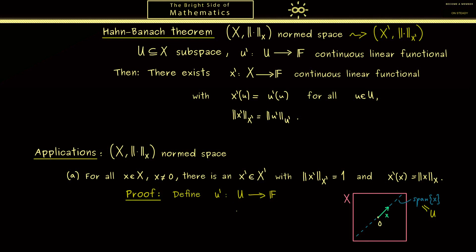Hence an arbitrary element always looks like λx. And we send this to λ times the norm of x. So this is a well-defined number in F and it also fits with our second condition here.